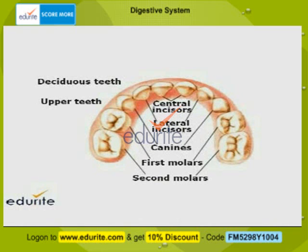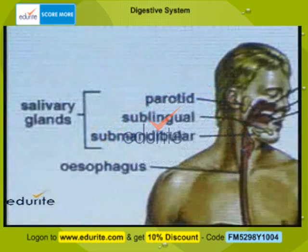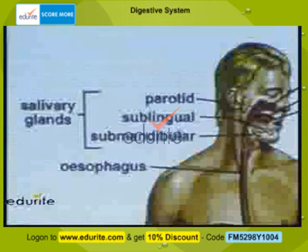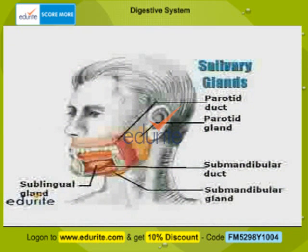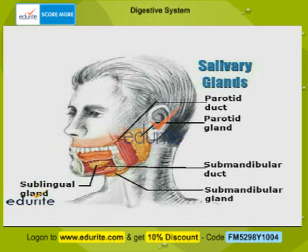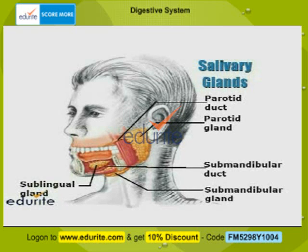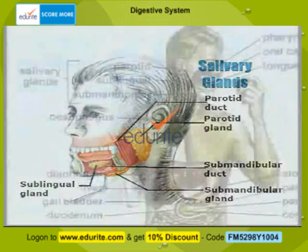The salivary glands present in the mouth are of three pairs: parotid, sublingual, and sub-mandibular. As the name suggests, parotid glands lie below the ear, sublingual below the tongue, and sub-mandibular below the lower jaw. The salivary glands secrete saliva, a highly alkaline fluid containing a lot of water, salts, and ions of sodium bicarbonate. More importantly, it contains an enzyme called salivary amylase, or ptyalin.